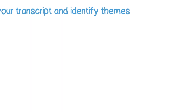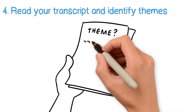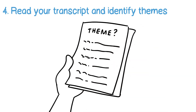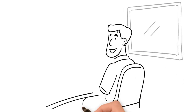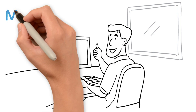Tip 4: Read your transcript and identify themes. Give each theme a name — this process is called coding. You can do this manually or using software. Keep notes of why you've named the theme in a specific way; these notes are called memos.